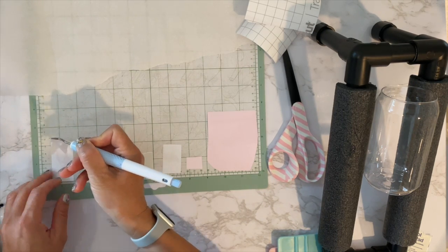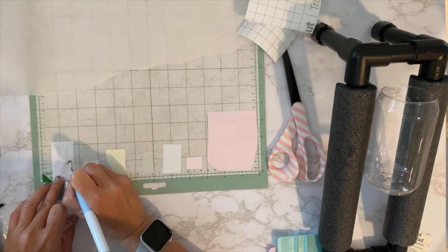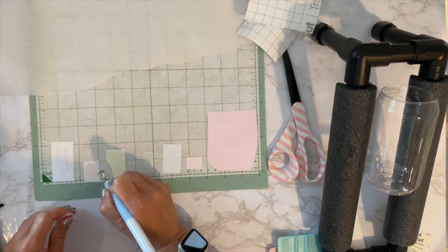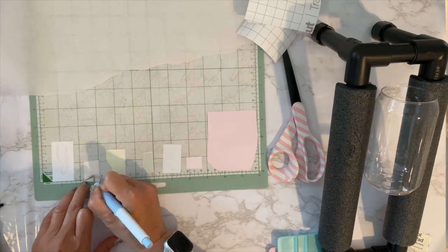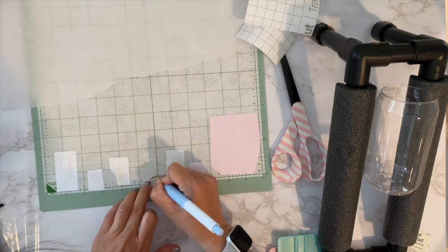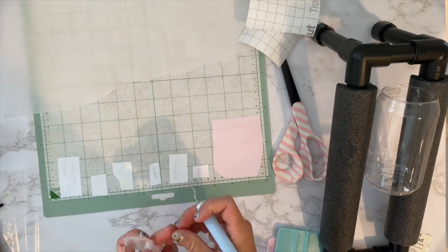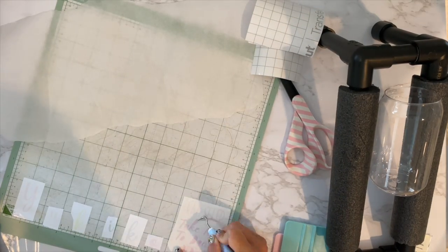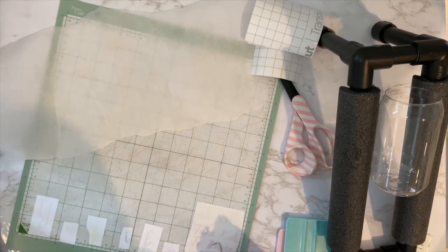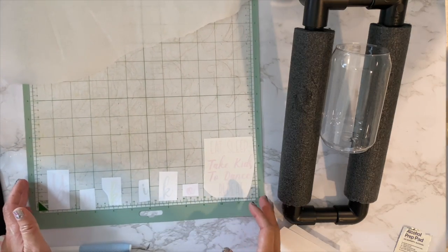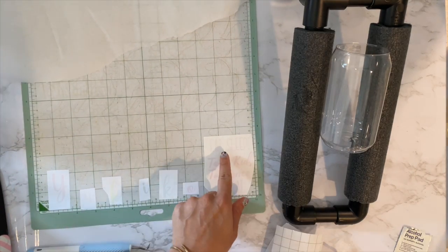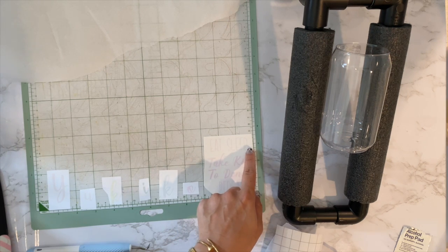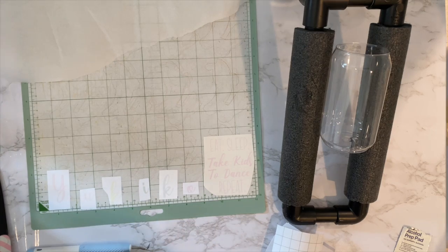You could get like a lint-free wipe to wipe it but that's just an extra step so I'm just gonna leave it down the side to dry and I'm gonna go ahead and weed out my design. It's pretty hard to see because this color change vinyl is pretty clear so it helps to do it on the mat in a well-lit area.